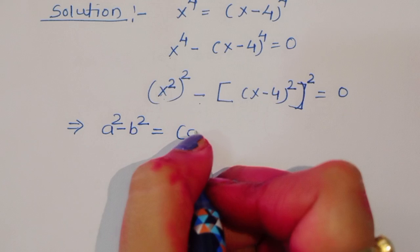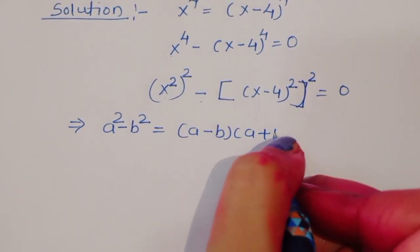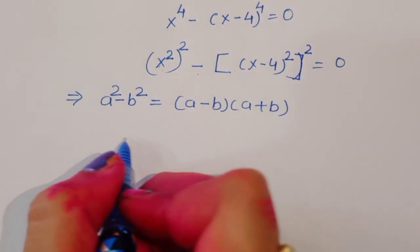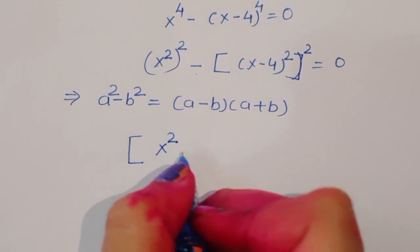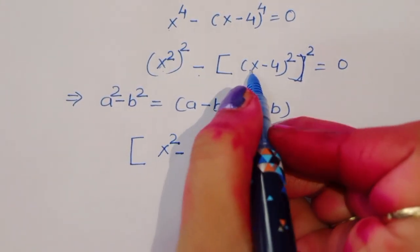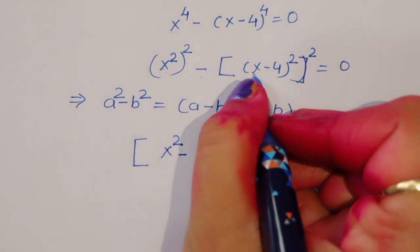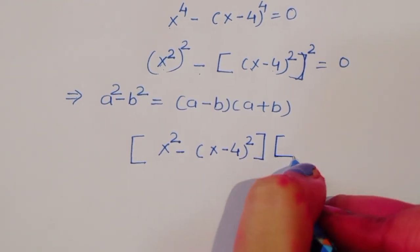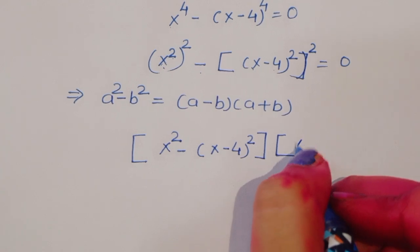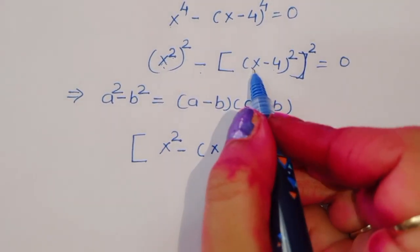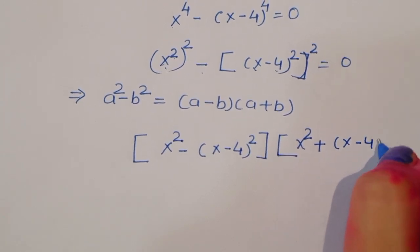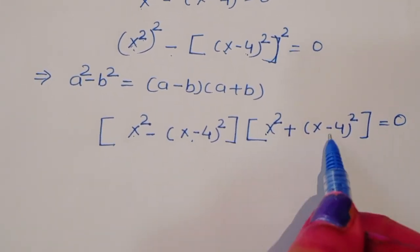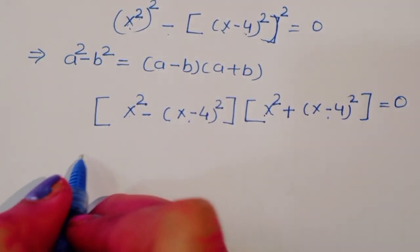This is now in the form of a² - b² = 0. We know the formula: a² - b² = (a - b)(a + b). Applying this formula, we get: (x² - (x-4)²)(x² + (x-4)²) = 0.